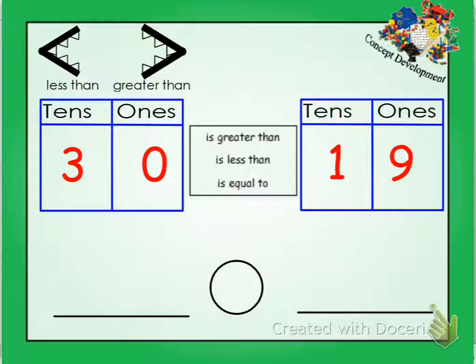So now, looking at this problem I have right here, they have 3 tens and 0 ones, which we know is 30, right at the top. And then we have, on the other side, 1 ten and 9 ones, which we know is 19.